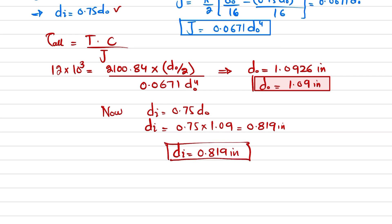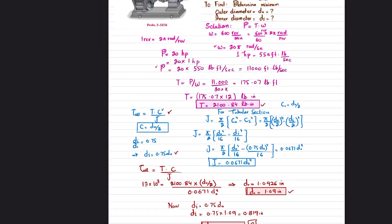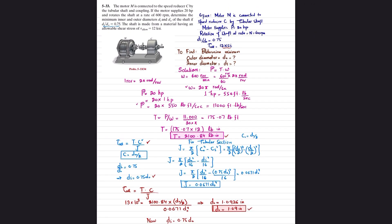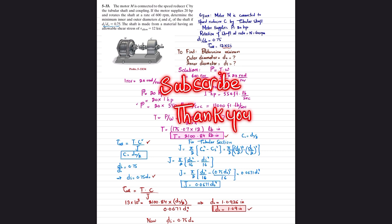So the inner diameter is 0.819 inches and the outer diameter is 1.09 inches. That was problem 5-33. I hope you enjoyed and learned from this video. If you're new to my channel, subscribe and press the bell icon for notifications on my latest videos. Any questions can be asked in the comments. Thank you for watching.